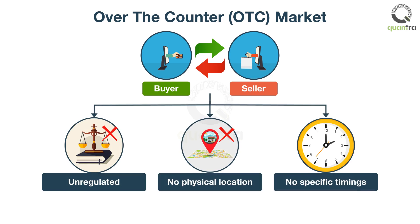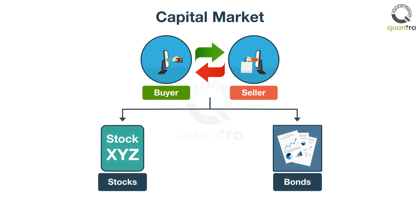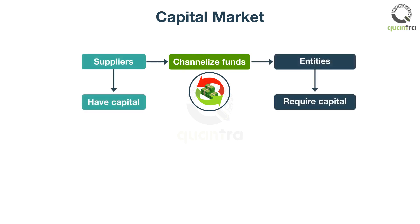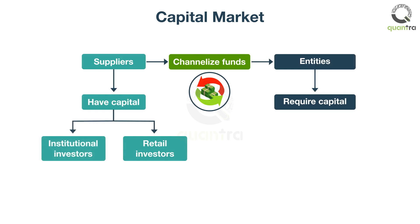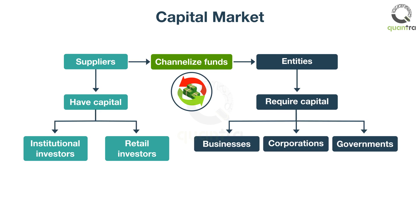Now let's look at capital markets. A capital market is a market where buyers and sellers engage in trade of financial securities like stocks, bonds, and so on. These markets help channelize funds between the suppliers who have the capital and those who are in need of capital. The suppliers include retail and institutional investors, and those who require capital include businesses, corporations, government, and so on. The most common capital markets are the stock markets and bond markets.